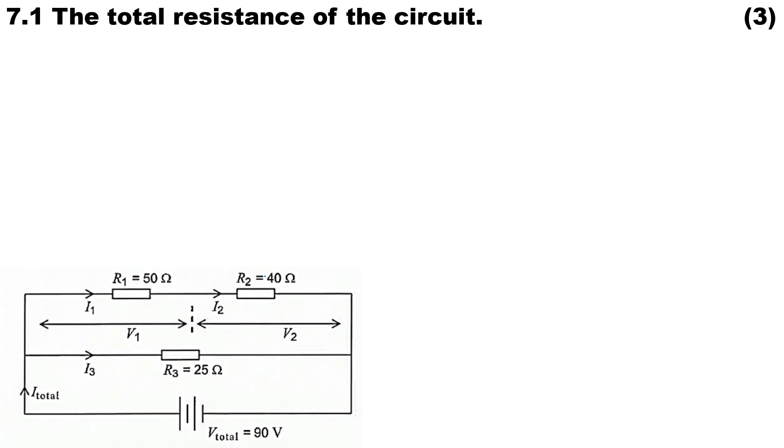The first question: we need to calculate the total resistance of the circuit. You'll notice we have a series combination that is in parallel to the 25 ohm resistor. To calculate this series combination, it will be R1 plus R2. R1 is 50 ohms and R2 is 40 ohms, so therefore that series combination will be 90 ohms.